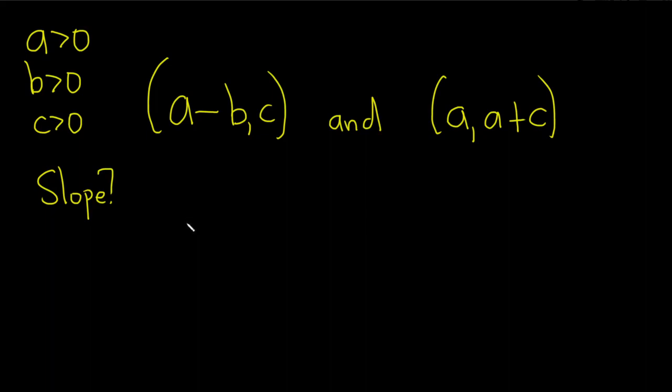In this problem, we have two points on a line, and here a, b, and c all represent positive numbers. We have to find the slope and determine if the line rises, falls, is horizontal, or is vertical.